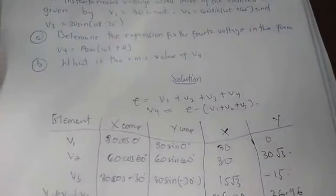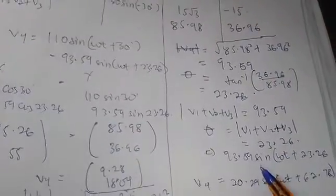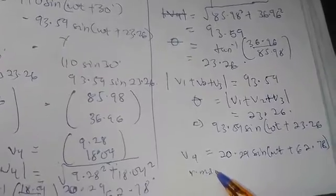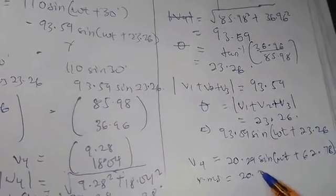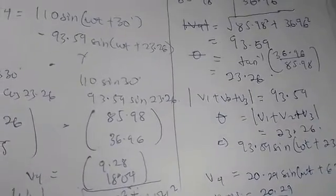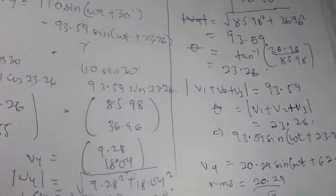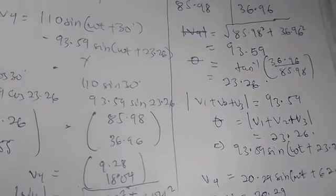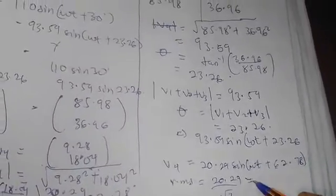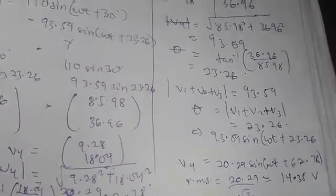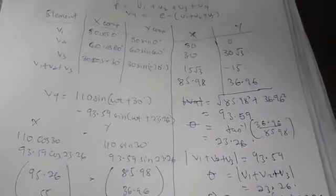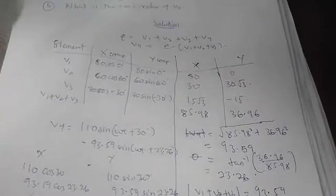The second part of the question asks for the RMS value of V4. You take the peak value and divide by √2. So RMS = 20.29 / √2 = 14.35. Thanks for watching this video — kindly subscribe as I'll be posting more of these relevant videos.